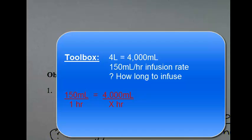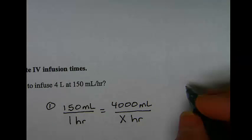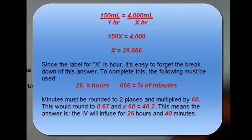When I do this, I also need to recognize that what I get in time on the right-hand side of the decimal will not represent minutes, but a fraction of minutes. To finish this, 150x equals 4,000. This is 26.66. This represents 26 hours.